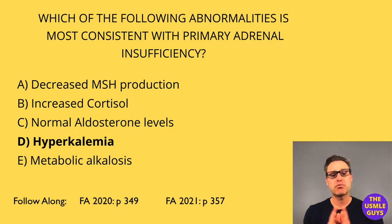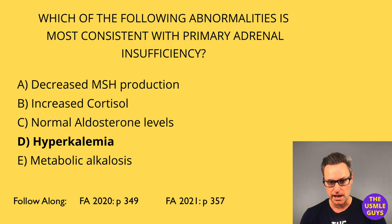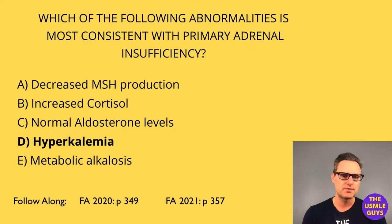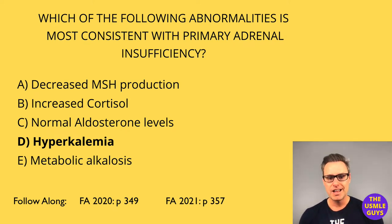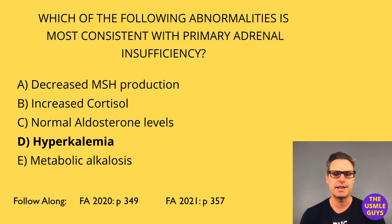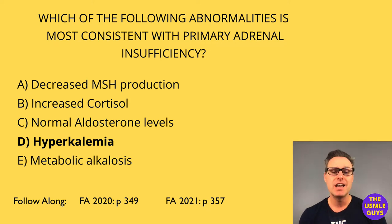In primary adrenal insufficiency, there is decreased function in the glands themselves, resulting in abnormalities from decreased cortisol production. When cortisol drops, we also see a drop in aldosterone, causing hypotension, hyperkalemia, and metabolic acidosis. We also see characteristic hyperpigmentation due to increases in MSH that stimulates melanin production.